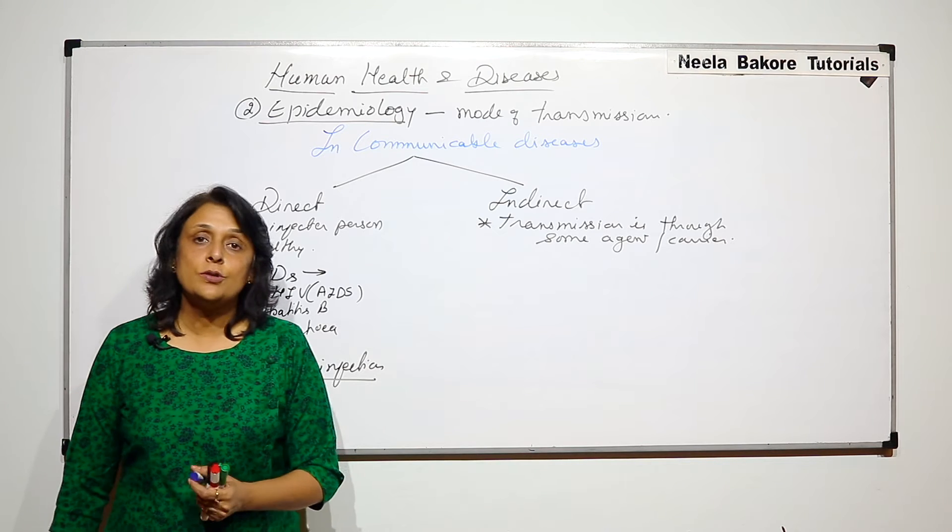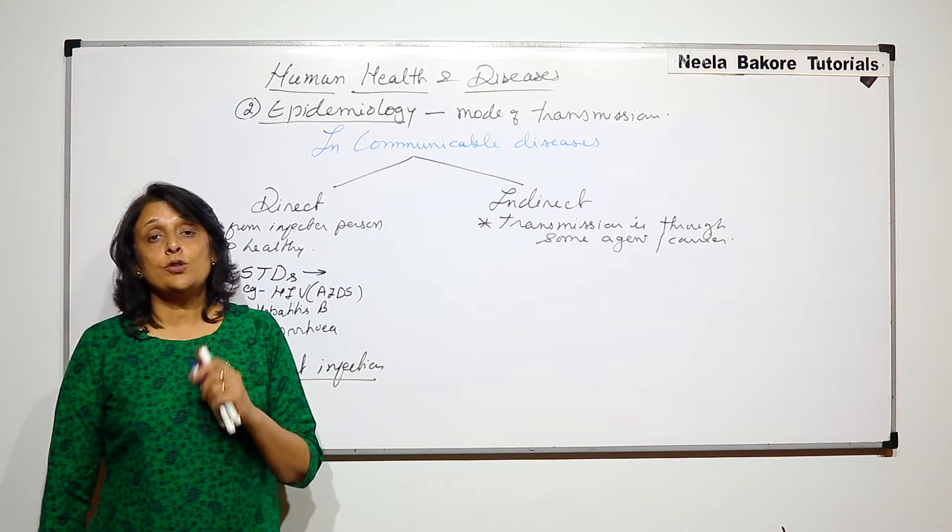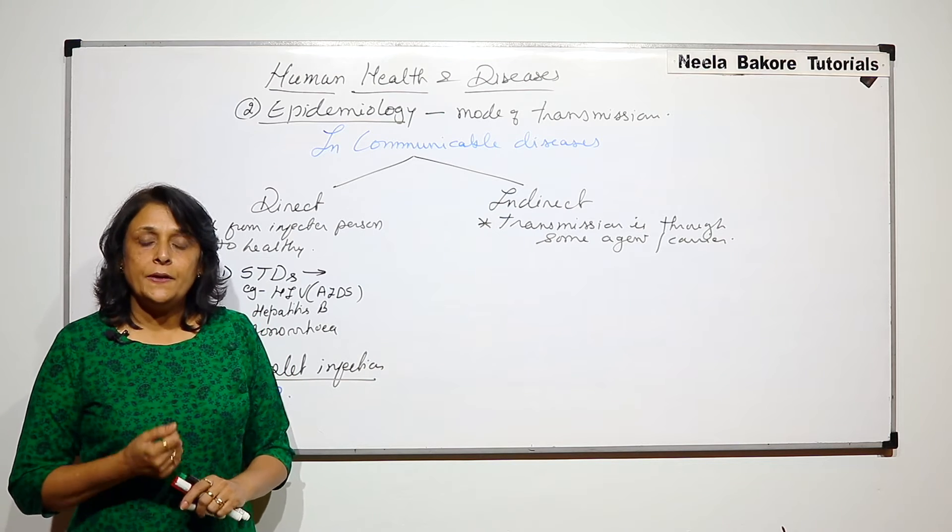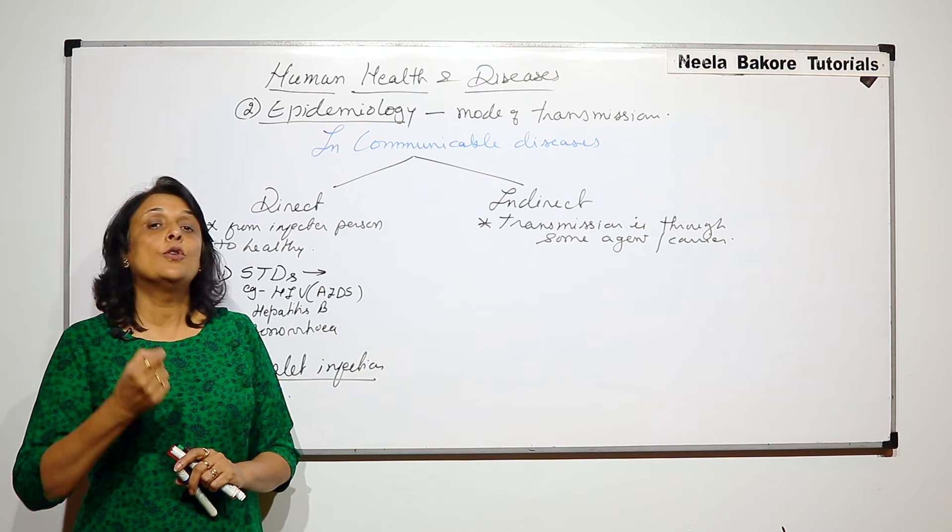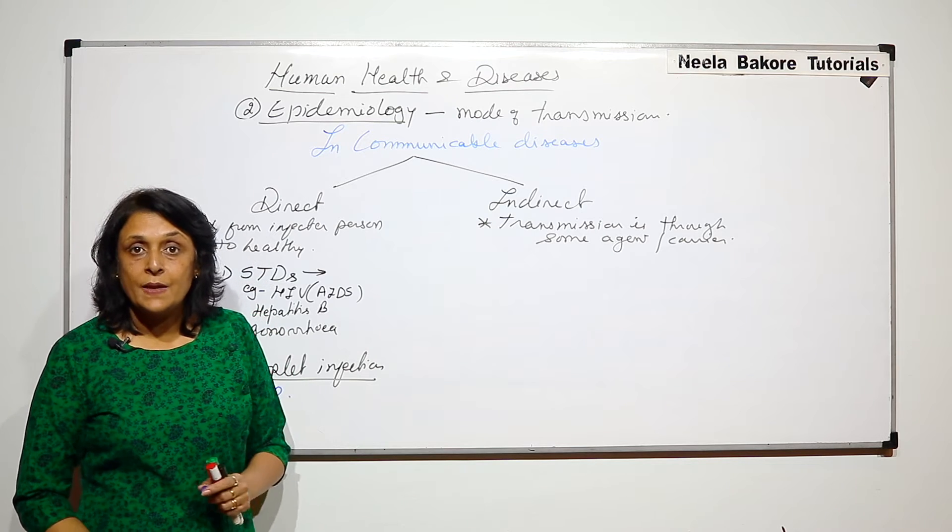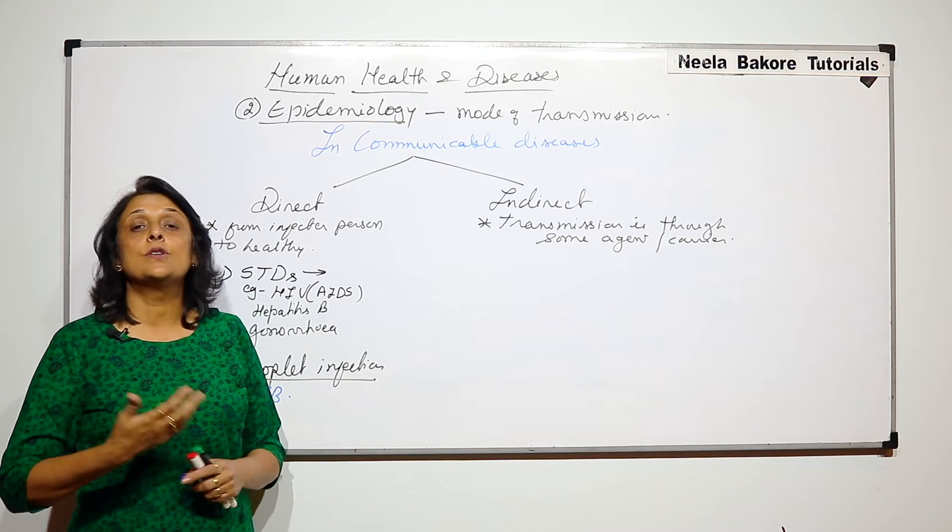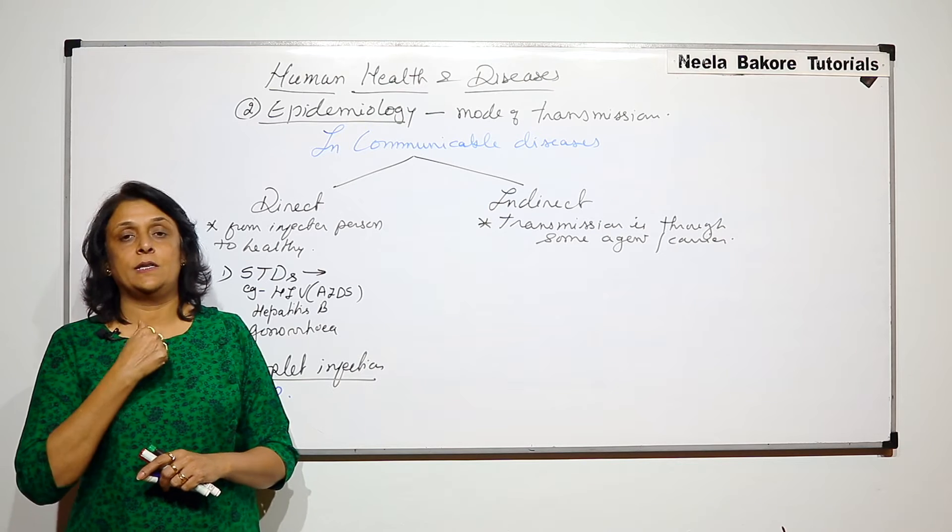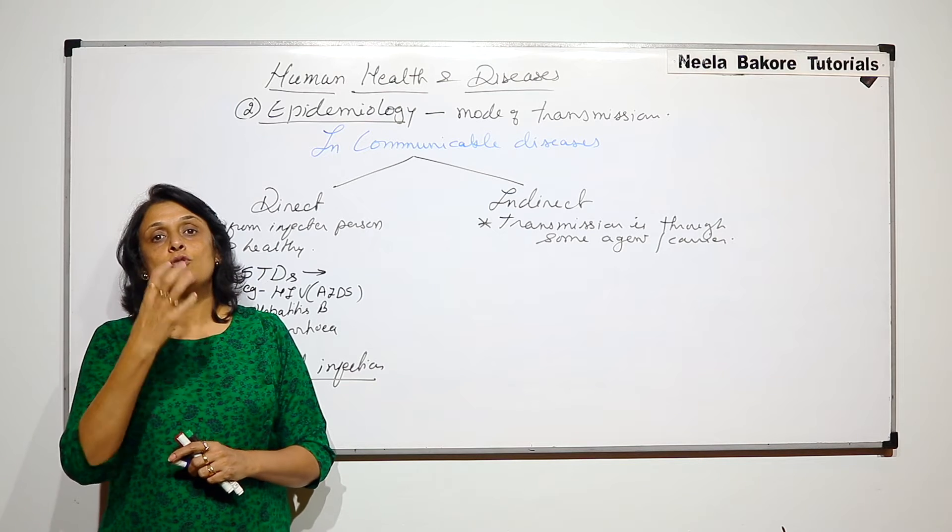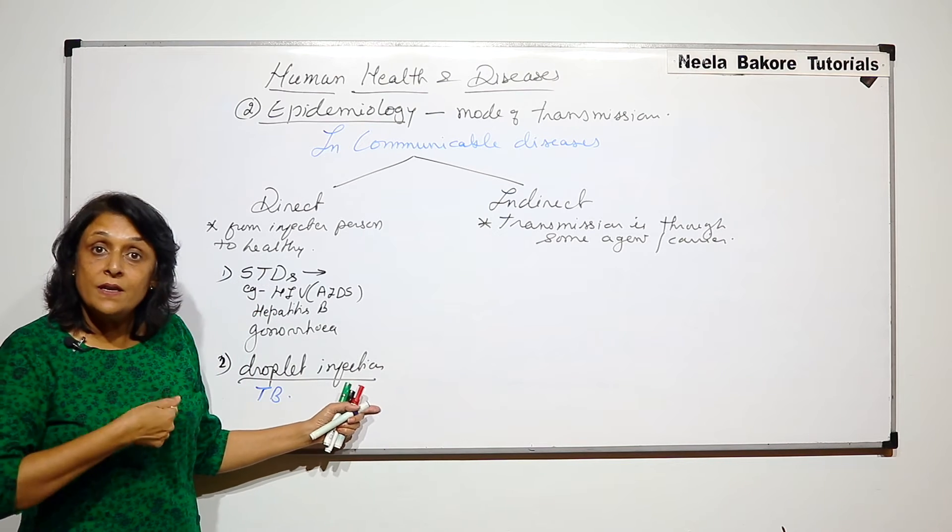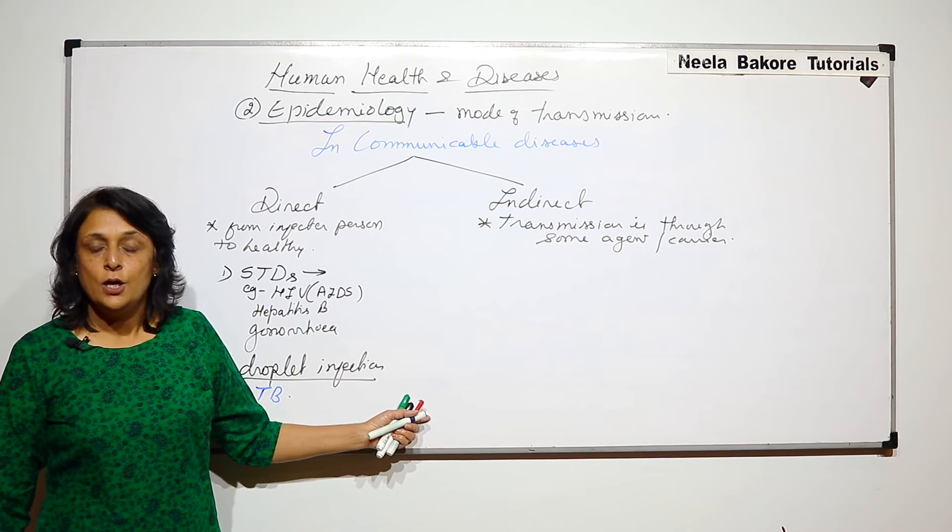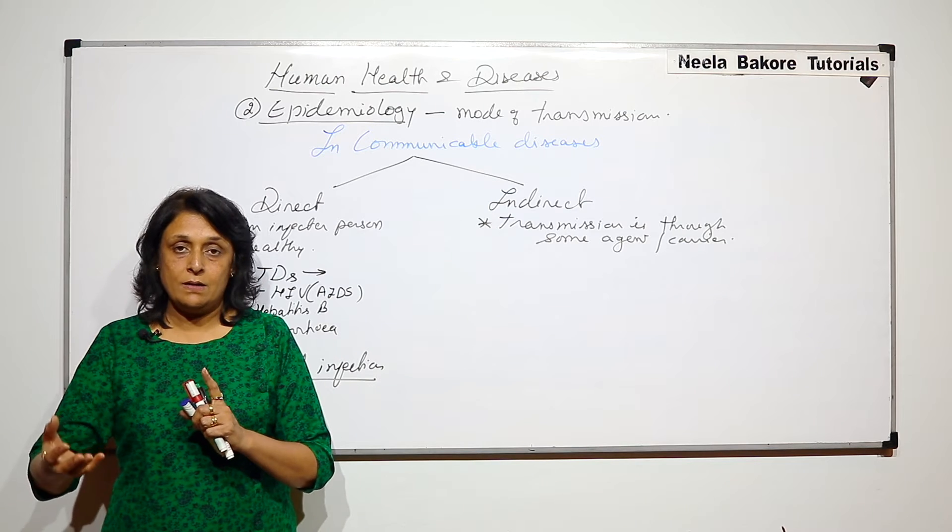If a person has tuberculosis we know the most common symptom is that the person keeps coughing. If you keep coughing then there are droplets which come out of your nose or mouth. This happens when you cough or sneeze. And suppose there is a person who is sitting in front of you and those droplets get into other person's body because the person is inhaling and those droplets get inhaled, then from the infected person the infection has gone to the healthy person. So it is like a direct transmission.